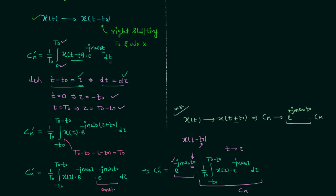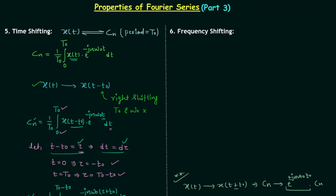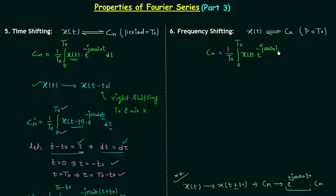Now we move to the sixth property, which is frequency shifting. We consider a signal x(t) whose complex exponential Fourier coefficient is cn and the period is t0. We know the formula: cn = 1 over t0, integration from 0 to t0 of x(t) e^(-jnω₀t) dt. We perform frequency shifting — the coefficient cn changes to cn-m — and as the coefficient changes, we have a new signal x'(t) which we need to find.